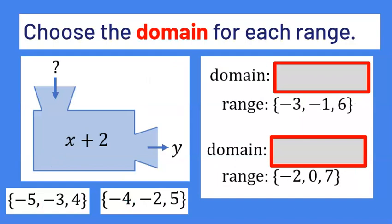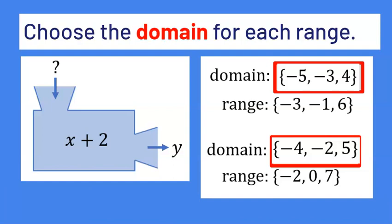Now you try. Take the function machine and the given range — these are your y values. Solve to find your x values and choose the domain. The function machine says x plus 2. If your first y value is negative 3, subtract 2 to get negative 5. If y is negative 1, subtract 2 to get negative 3. If y is 6, subtract 2 to get 4. So the domain was negative 5, negative 3, 4 for the first range. For the second range: y equals negative 2 gives negative 2 minus 2 equals negative 4; y equals 0 gives 0 minus 2 equals negative 2; y equals 7 gives the next input value.